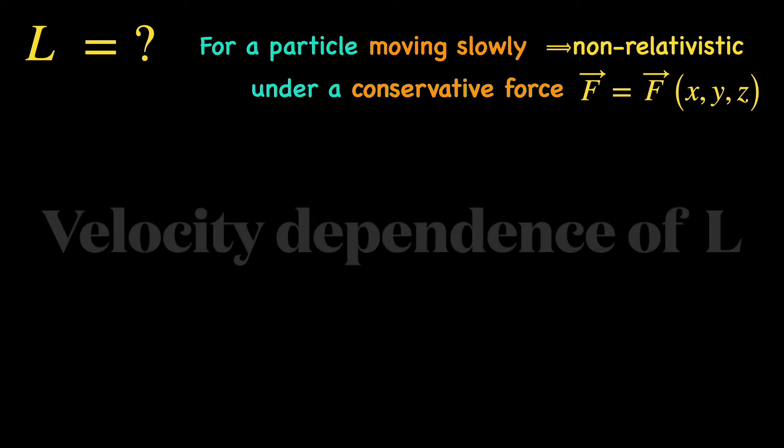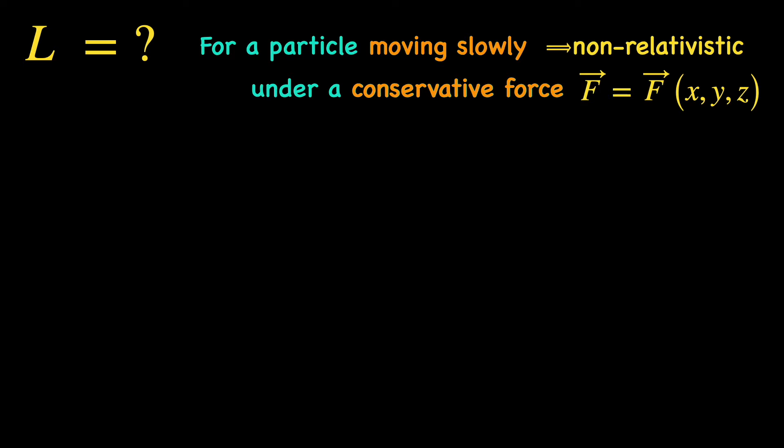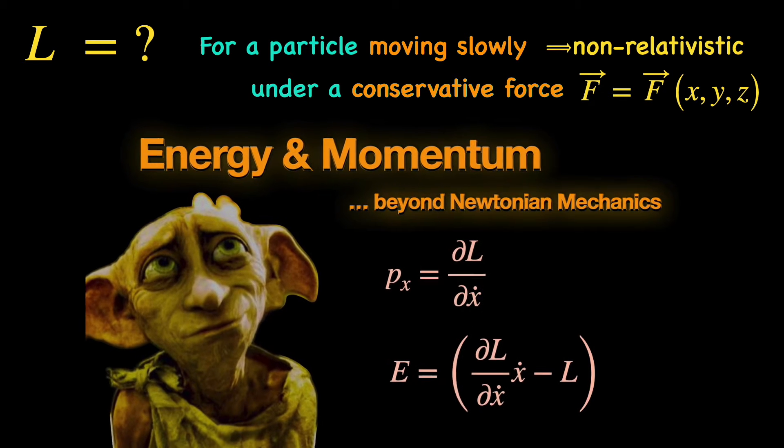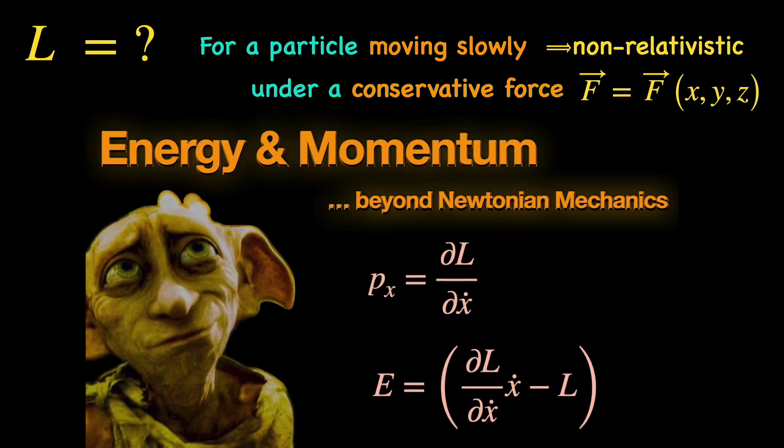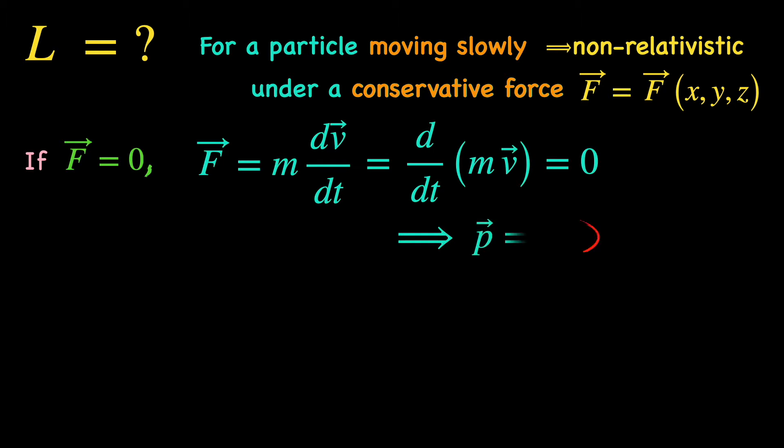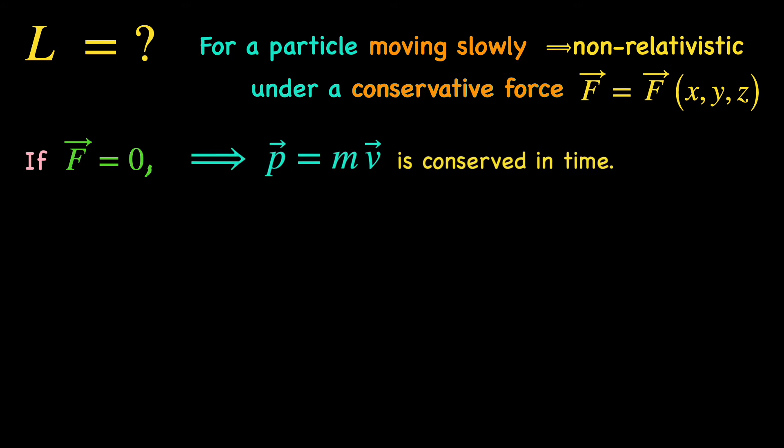We discussed it at length in our last video, link is in the i-cards. But to give you a brief overview, in there we demonstrated that under the condition of zero applied force, Newton's second law ensures that momentum P given by mass times velocity of a particle stays conserved in time. Then we explained that in case of conservative forces, zero applied force is a consequence of the homogeneity of space,